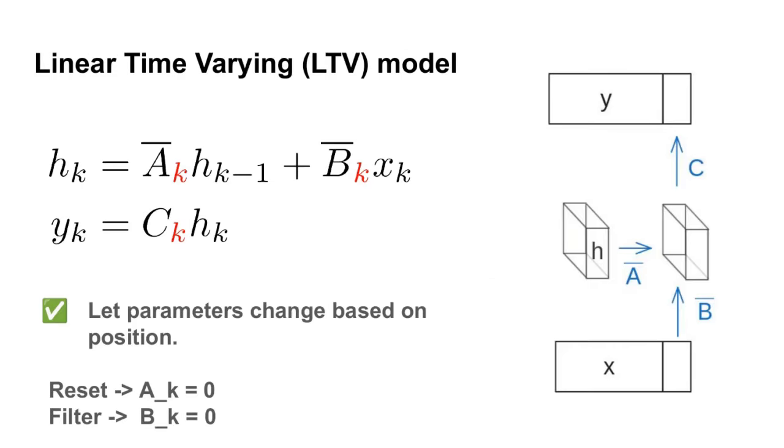The solution proposed to this problem is going to look pretty trivial, but we'll see why it's a little bit more complex in the next section. We're basically going to switch from linear time invariant models to a model we'll call linear time varying. And the only difference is that we're going to allow A-bar, B-bar, and C to change depending on the position in the sequence. So instead of having a single matrix A-bar, we'll now have A-bar sub-K for each position.